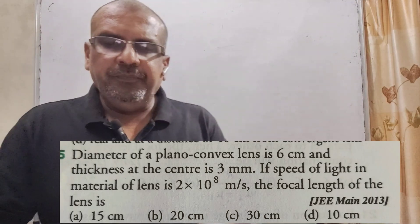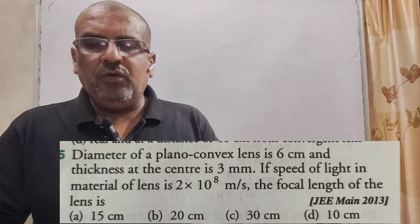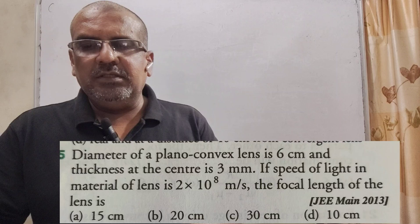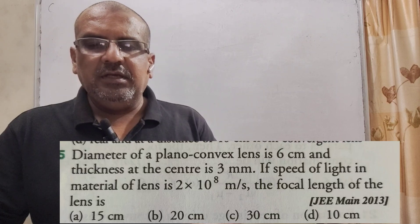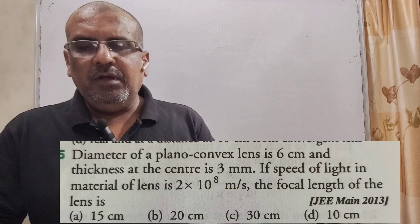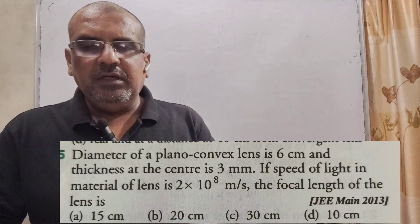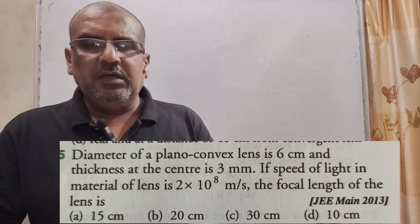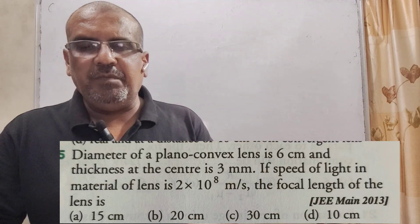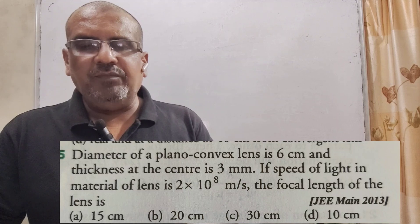Now here is the question. Diameter of a plano convex lens is 6 cm and thickness at the center is 3 mm. If speed of light in material of lens is 2 × 10^8 meter per second, the focal length of the lens is.